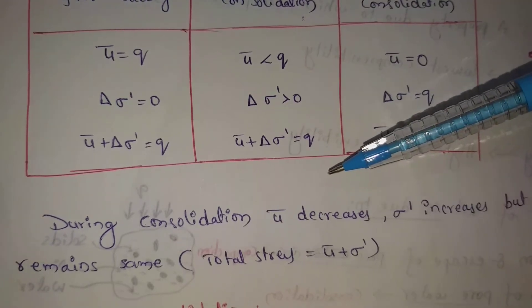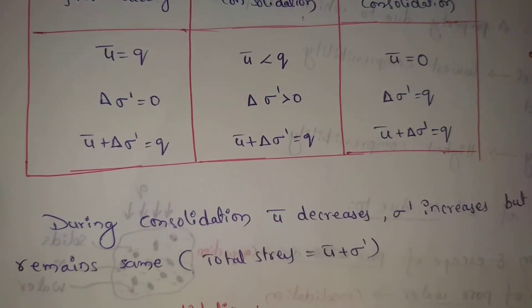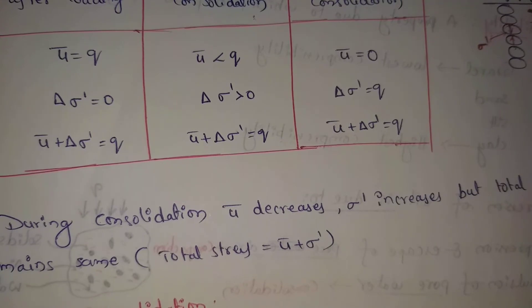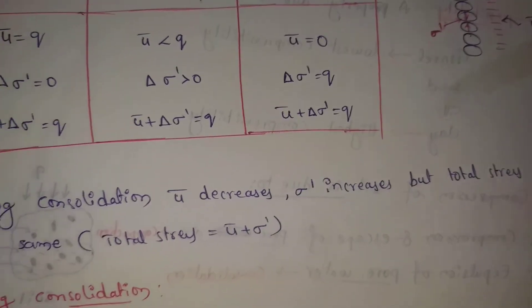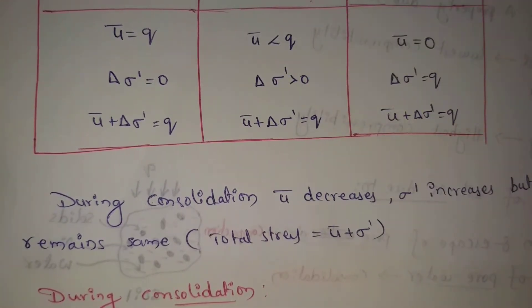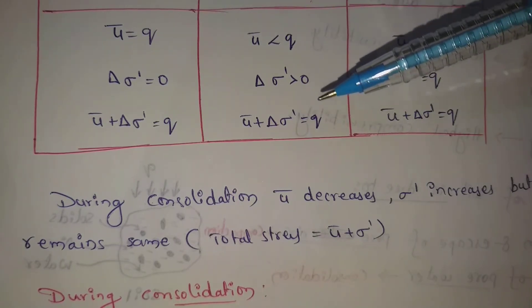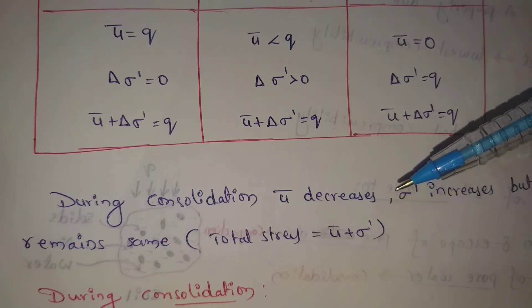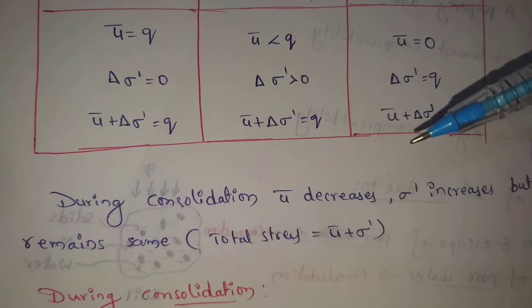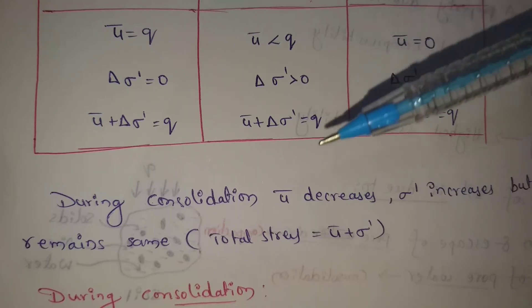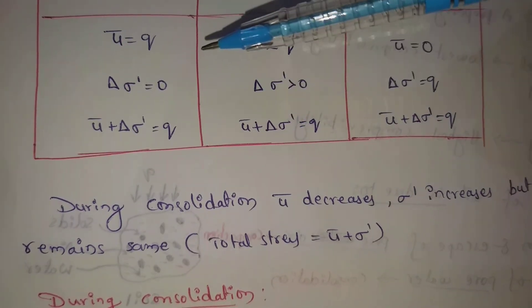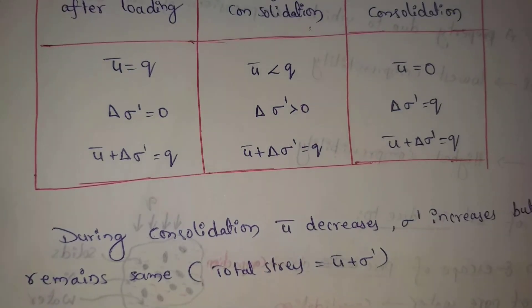During consolidation, u-bar decreases — that is, expulsion of pore water decreases. Sigma-dash, effective stress, increases. But total stress remains the same. Total stress is equal to pore water pressure plus effective stress. Effective stress equals total stress minus pore water pressure. Total stress remains constant with change. This is consolidation.